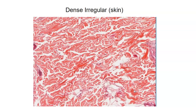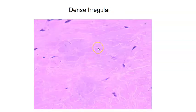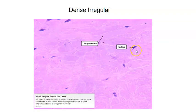Here's the dermis of the skin zoomed in. We can see the fibroblasts — the purple cells — and the red collagen fibers running in multiple directions. Here's more dense irregular tissue with a different magnification and stain — a nucleus is visible, and collagen fibers run this way and in other directions as well.